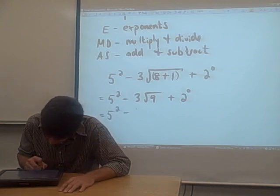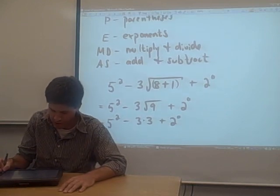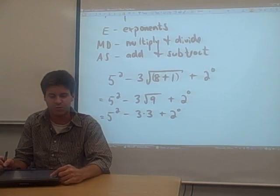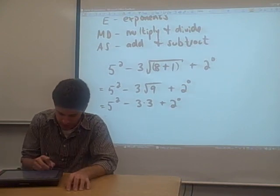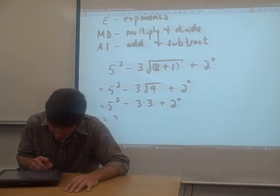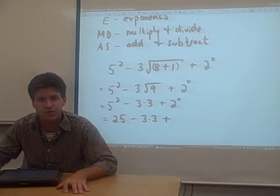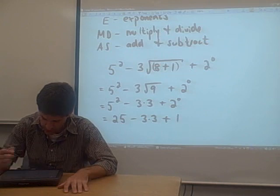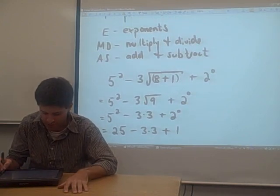So five squared minus three times three plus two to the zero. Okay, so that takes us through the parentheses section. Now the next thing is E. We need to simplify all of our exponents, carry them all out. And there's a couple of exponents in this problem. One is the square on five, and you may know from your time tables that five squared is 25. You may also know that anything to the zero power is just one. So two to the zero power equals one. So we carried out all of our exponents. There are no more exponents in this problem.